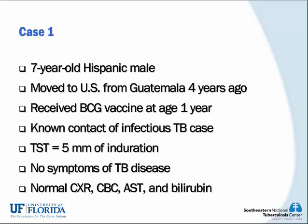The first case is a seven-year-old Hispanic male who moved to the U.S. from Guatemala four years ago. He received a BCG vaccine at the age of one year and is a known contact of an infectious TB case. His TST is five millimeters of induration. He is asymptomatic and has a normal chest x-ray, CBC, liver enzymes, and bilirubin.